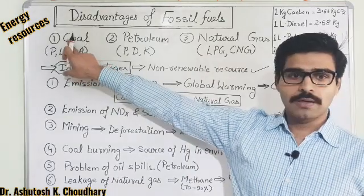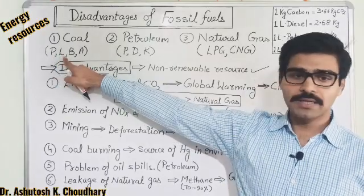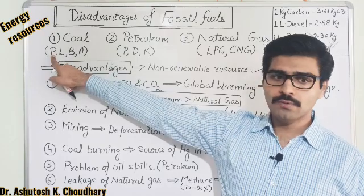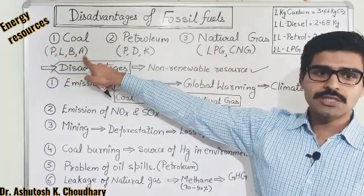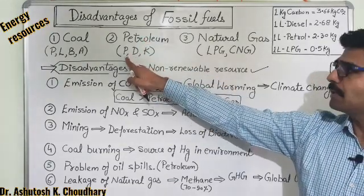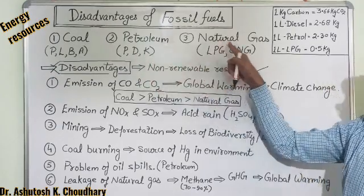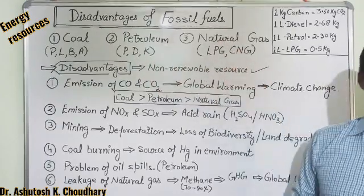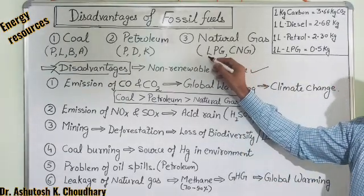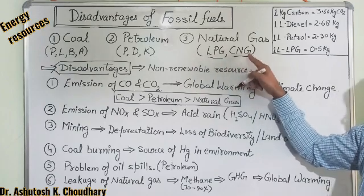In Coal there are four different categories: Peat, Lignite, Bituminous, and Anthracite. Peat is the poorest quality of coal and Anthracite is the best quality. In Petroleum, three major products are there: Petrol, Diesel, and Kerosene Oil. In Natural Gas we have two types: LPG (Liquefied Petroleum Gas) and CNG (Compressed Natural Gas).